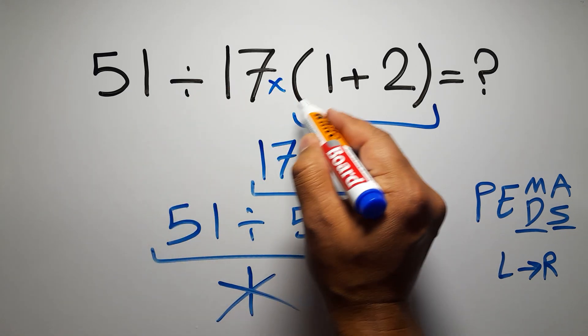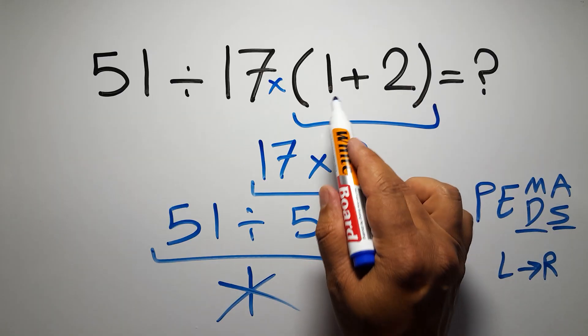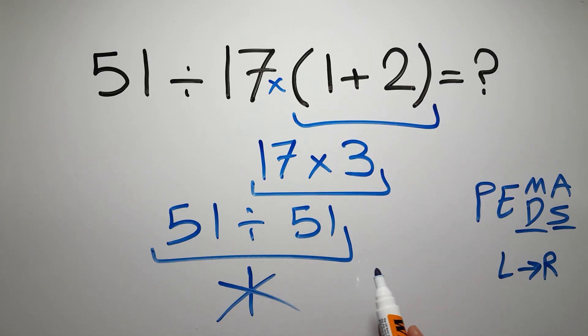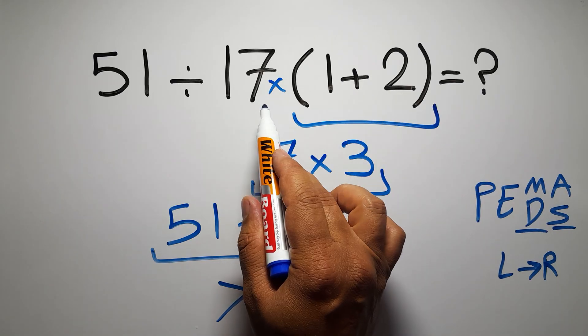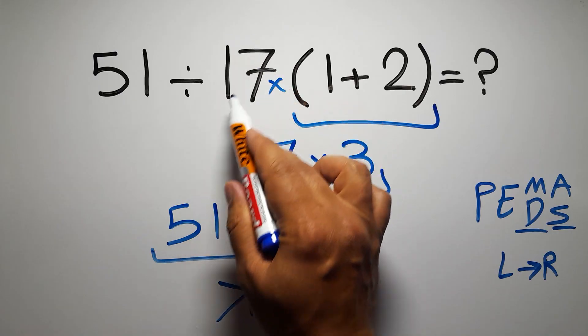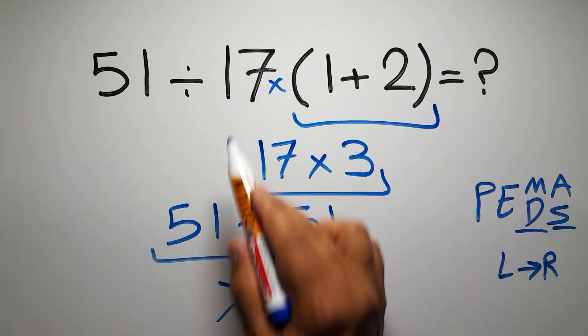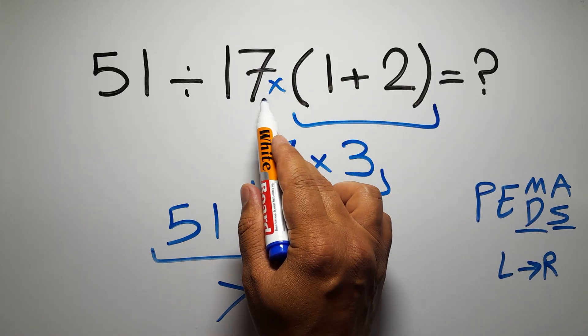Here in this expression we have one division, one multiplication, and one parentheses. Inside this parentheses we have one addition. We have a multiplication because in mathematics when a number is placed next to parentheses it means multiplication, and we usually don't write the multiplication sign for brevity.